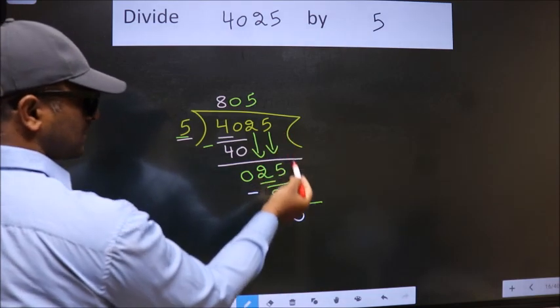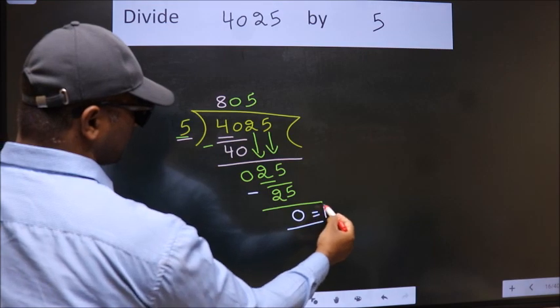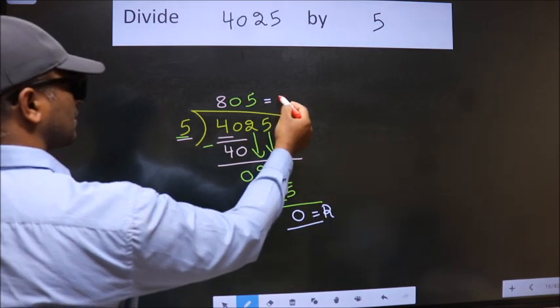No more numbers to bring it down, so we stop here. This is our remainder. This is our quotient.